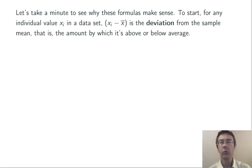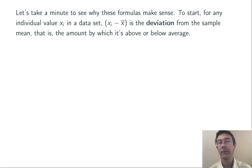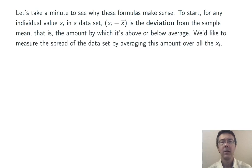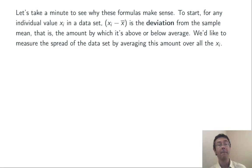The key to each formula is this quantity xi minus x-bar. This represents the deviation of each x value, xi, from the sample mean — in other words, the amount by which it's above average or below average. Fundamentally, we'd like to take the average of that: see how each value deviates from the mean, whether it's big or small, and then take the average of that.